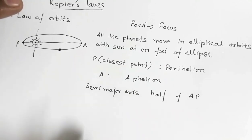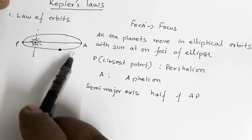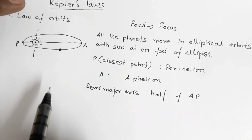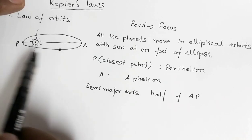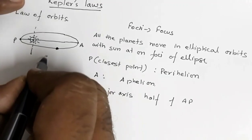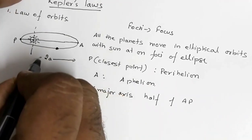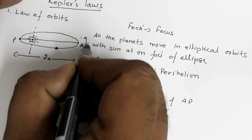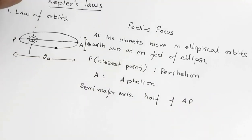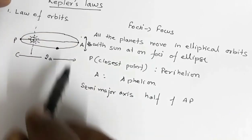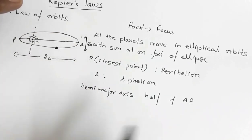So A is called aphelion, P is called perihelion, and the semi-major axis means half of the distance AP — AP is the major axis. We mark this distance as twice A and this distance as twice B. So this is the law of orbits, and these are a few terms associated with the ellipse which will be useful later in understanding the other two laws.